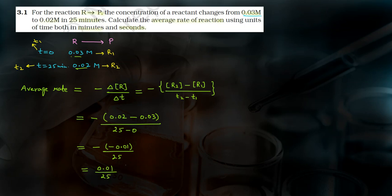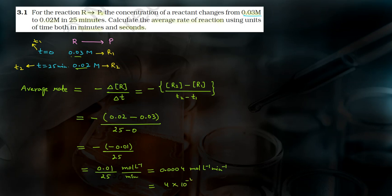Let's check the units. On top we have concentration, so the unit is mole per litre. Divided by 25, which was in minutes. So 0.01 divided by 25 gives 0.0004 mole per litre per minute. This can also be written as 4 × 10⁻⁴ — moving the decimal 4 places gives 10 to the power minus 4. The unit is M per minute. This is the answer in minutes.